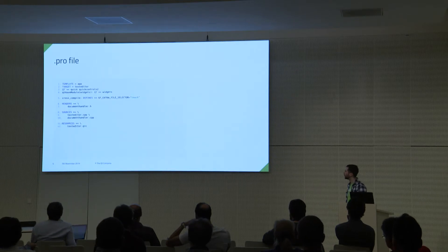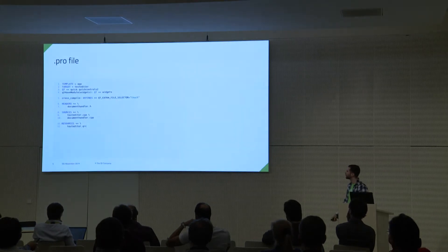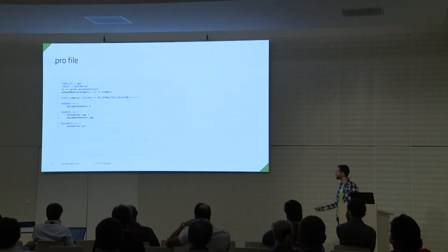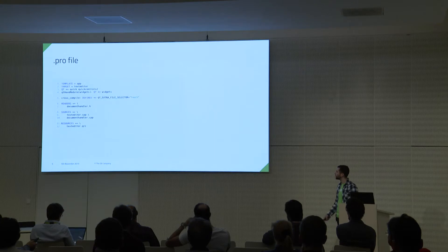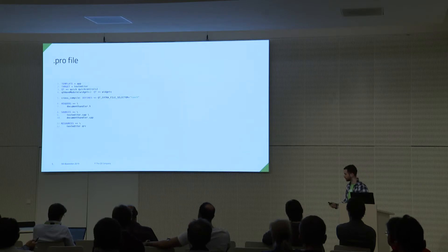This is the profile for the project in Qmake. It's pretty simple. It says: build an app, it's going to be called text editor, uses Quick Controls 2, sometimes widgets depending on if we're cross-compiling, use the touch resources, and of course the text editor CPP file and the QRC for the images and other resources.